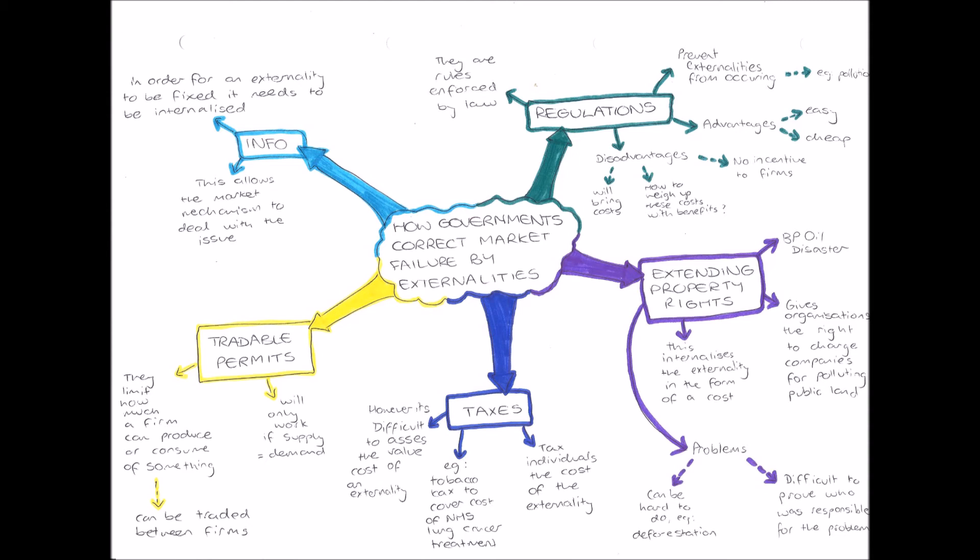However, extending property rights does have problems. For example, with deforestation, you can charge a company for cutting down trees, but using that money to regrow trees is difficult because growing trees takes a long time. Also, it can be difficult to prove who is responsible for a problem — for example, if three chemical factories are within a mile of each other and there's a chemical leak, it's very hard to prove which factory is responsible.